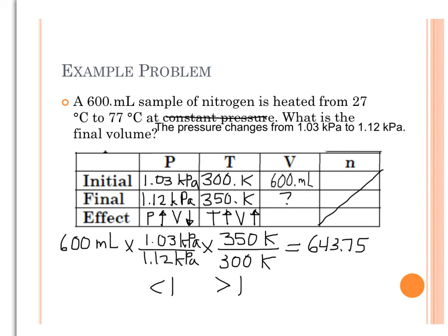So we need to check significant figures. There's 3 here because there's a decimal point. There are 2 in each of my temperatures, and there are 3 in my pressures. So that means I should round my answer to have 2 significant figures, the smallest of all those options. So it'll be 640 milliliters.